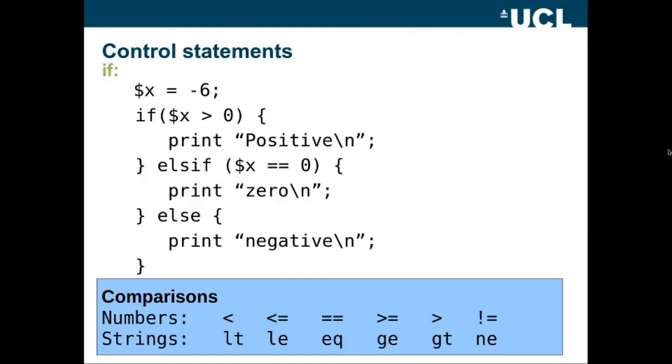We have control statements, just as we do in Python. And the first of these is the if statement. So here we're setting the scalar variable x to minus 6. Then we're saying if x is greater than zero, then we start a block of code with a curly bracket, print positive. And we end the block. Then we say else if x is equal to zero, start a block, print zero. Else, print negative. Now notice each of the actual commands where we're doing something rather than considering a condition are ended with a semicolon. That's another difference from Python.